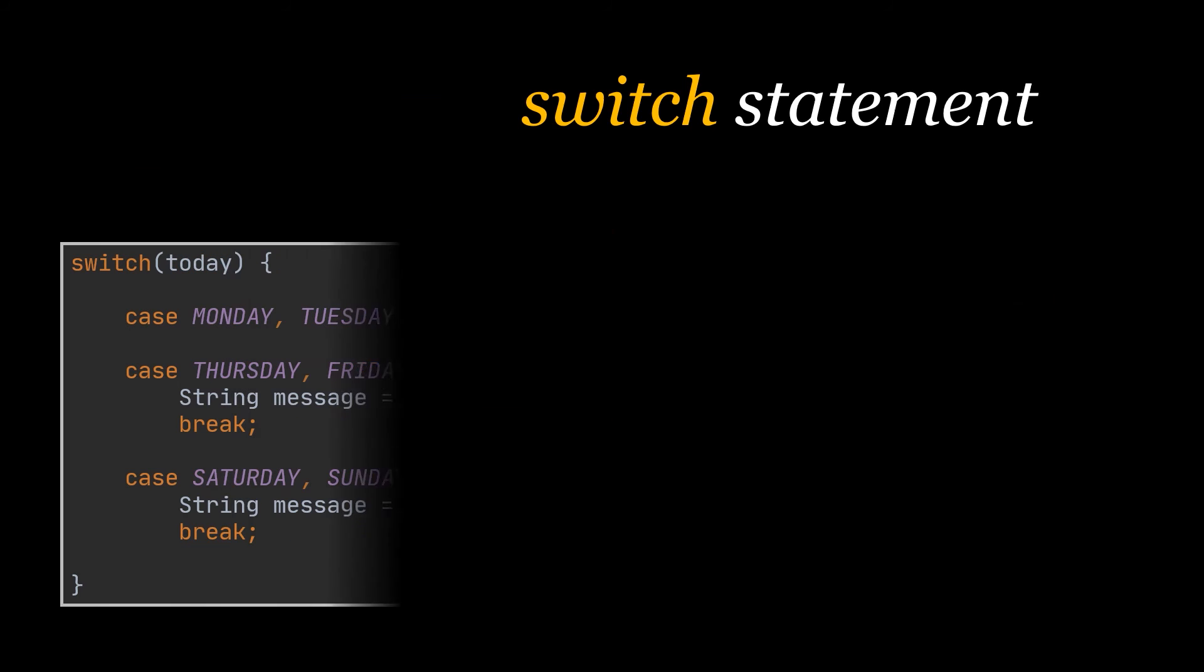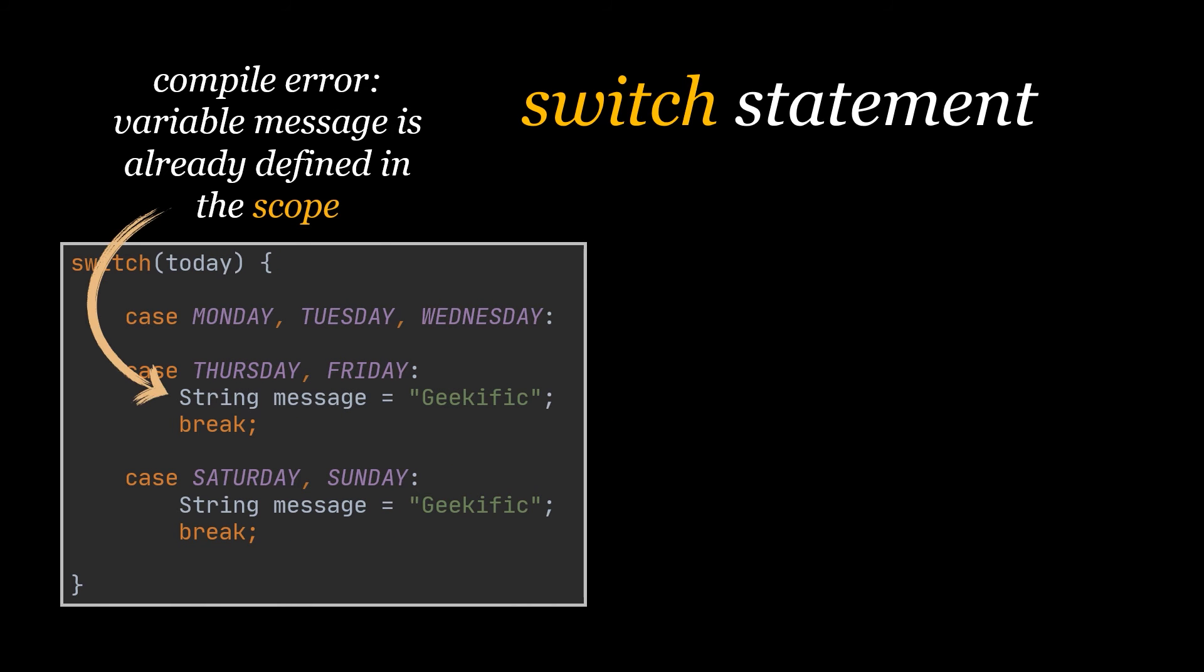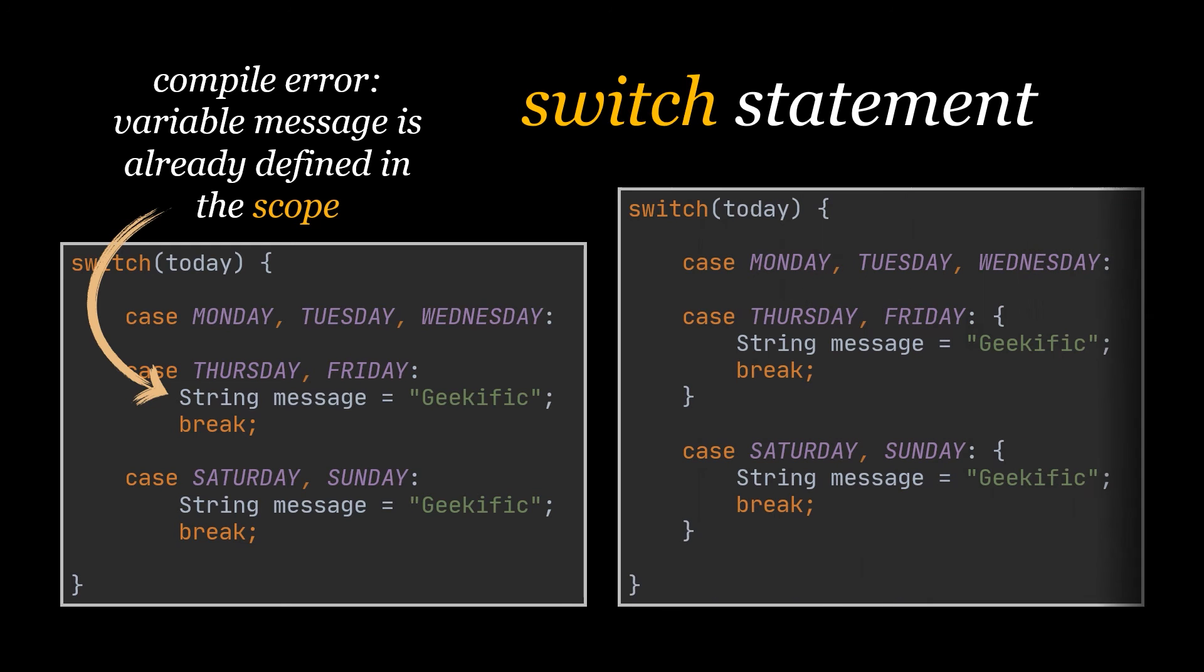All switch cases share the same scope. So if we were to define the same variable in two switch cases, our code will not compile and will tell us that this variable is already defined in the scope. What we can do to resolve this is use curly braces in each of our cases. When used, they will ensure that each case has a scope of its own.